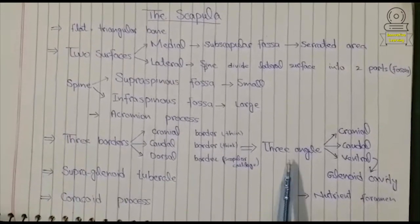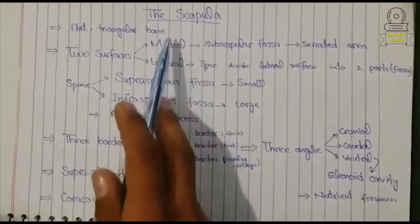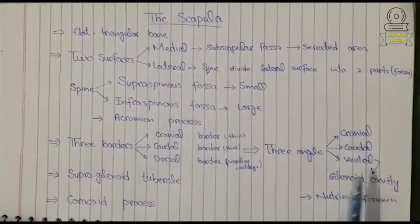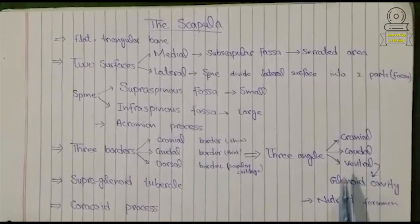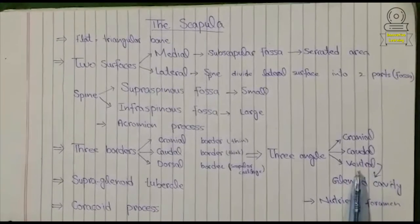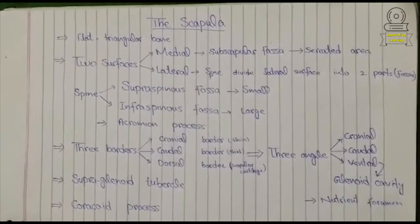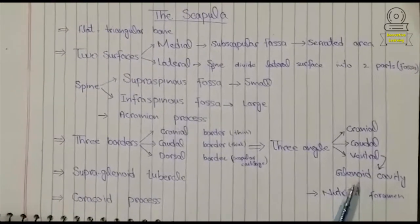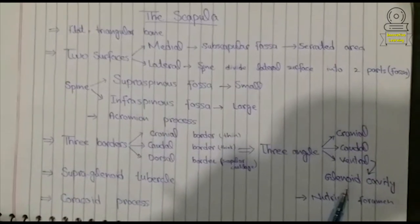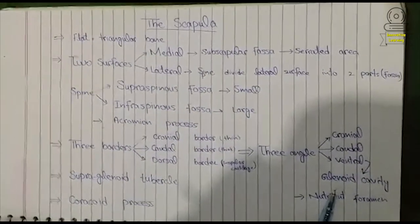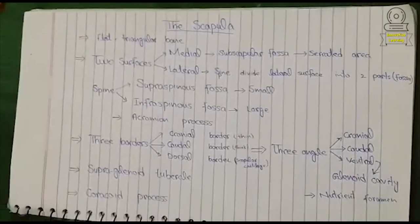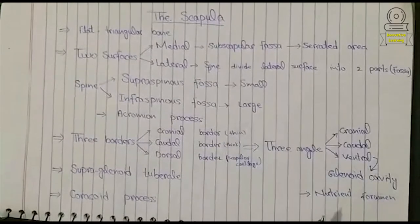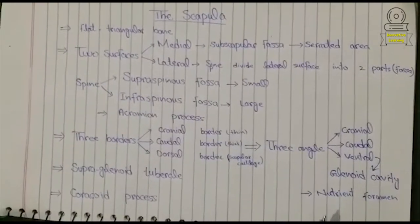The scapula has three angles: the cranial angle, the caudal angle, and the ventral angle. On the ventral angle, there is a glenoid cavity which articulates with the head of the humerus bone. A nutrient foramen is also present in the glenoid cavity.